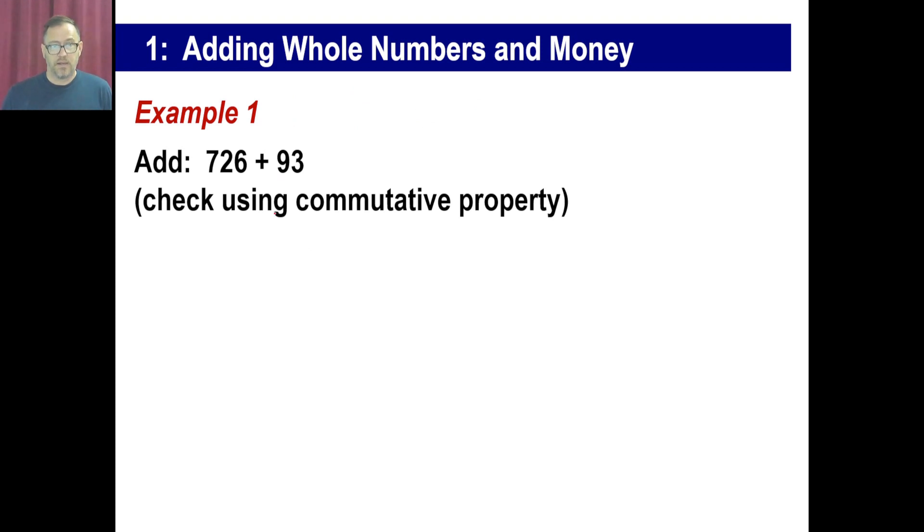All right, here's an example. 726 plus 93. You've probably seen this a million times before. Let's just go over it. You write them, and where your 1s and 10s and 100s are all lined up. So 6 plus 3 is 9. 2 plus 9 is 11. You put the 1 there, and there we go, and that's 819. Now, check using the commutative property? Well, fine. We'll go 93 plus 726, and you go down, down, down. You'll get the same exact thing, 819. There's your check.